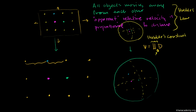Hubble's constant is a very non-constant constant, because it will change depending on where we are in the evolution of the universe. We put the sub-zero subscript to show this is Hubble's constant right now. When we talk about distance, we're talking about the proper distance right now — if you actually had rulers and laid them down instantaneously across the universe.